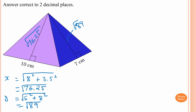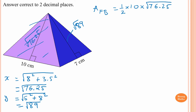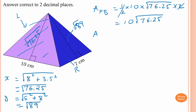Now we find the surface area. First the front and back: area = ½ × base × height = ½ × 10 × √76.25, then multiply by two because the front and back are the same. The twos cancel, giving 10√76.25. For the left and right sides: ½ × 7 × √89 × 2, and do not forget to multiply by two because both sides are the same.